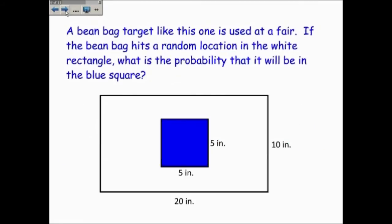Here's an example. A beanbag target like this one is used at a fair. If the beanbag hits a random location in the white rectangle, what is the probability that it will be in the blue square?